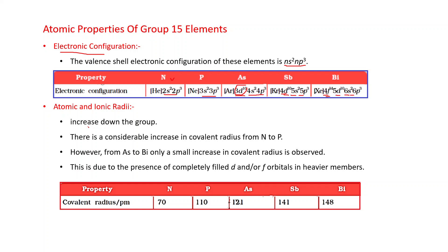Atomic and ionic radii increase down the group. There is a considerable increase in covalent radius from nitrogen to phosphorus, from 70 to 110. However, from phosphorus to arsenic, arsenic to Sb, and Sb to Bi, this increase in covalent radius is small. This is due to the presence of completely filled d and/or f orbitals in heavier members.